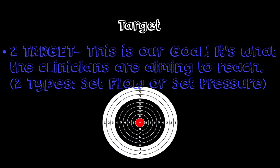Following that, the next phase variable is the target. The target is our goal — as the picture shows, it's what the clinicians are aiming to reach. There are two types of targets: a flow target or a pressure target.